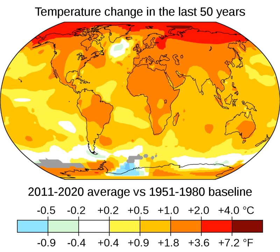Examples of external forcings include changes in the concentrations of greenhouse gases, solar luminosity, volcanic eruptions, and variations in the Earth's orbit around the Sun. To determine the human contribution to climate change, known internal climate variability and natural external forcings need to be ruled out. A key approach is to determine unique fingerprints for all potential causes, then compare these fingerprints with observed patterns of climate change. For example, solar forcing can be ruled out as a major cause. Its fingerprint would be warming the entire atmosphere, yet only the lower atmosphere has warmed, consistent with greenhouse gas forcing.